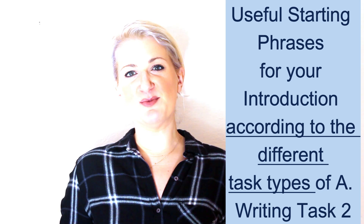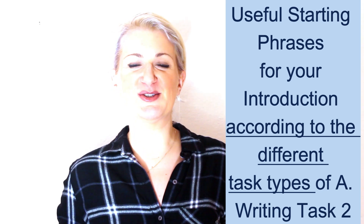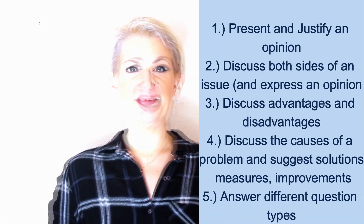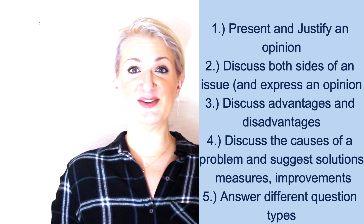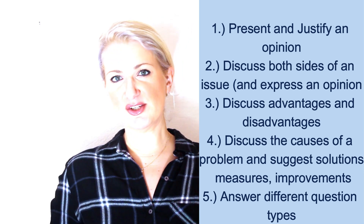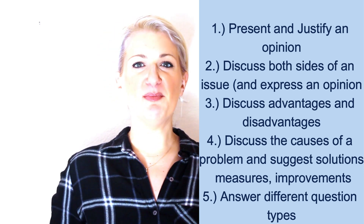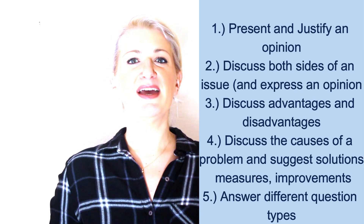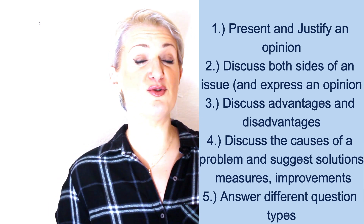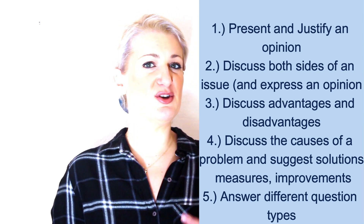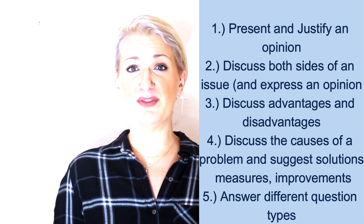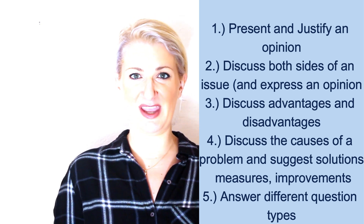The different task types you may come across in Academic Writing Task 2 of IELTS are five mainly. The first one is to present and justify an opinion. Number two would be discuss both sides of an issue and express your opinion if asked. Number three would be discuss advantages and disadvantages of a certain issue. Number four, discuss the causes of a problem and suggest solutions, measures or improvements. And the last one could be a combination of all the above in which you answer different question types together.